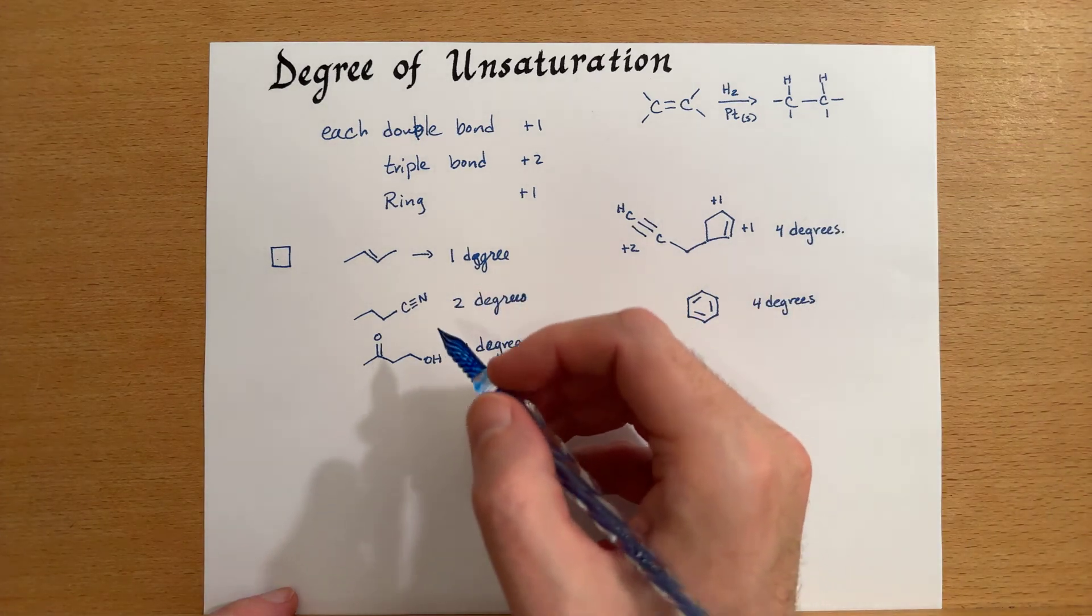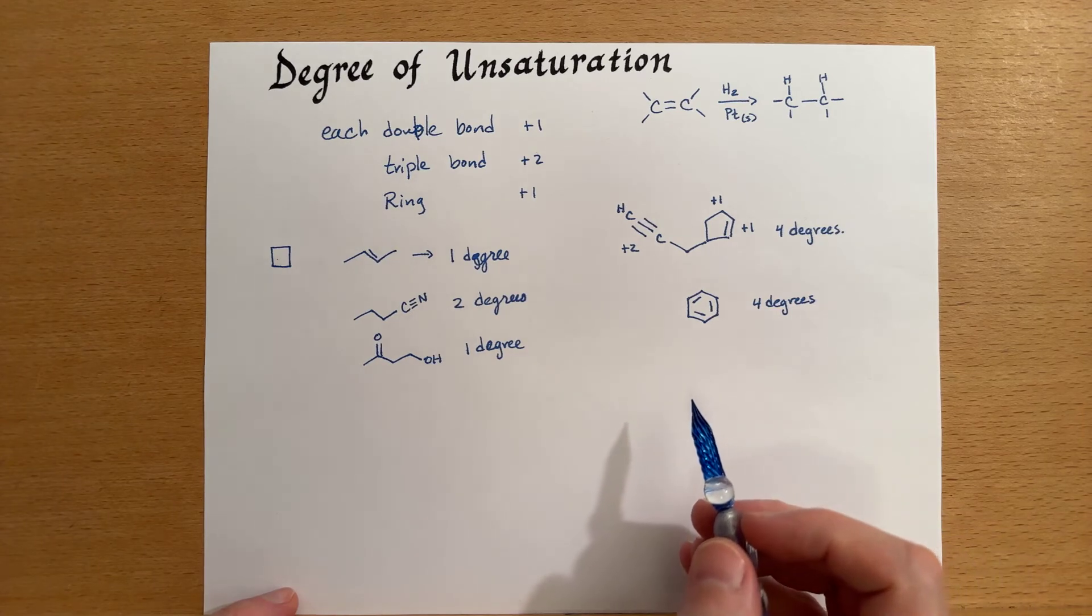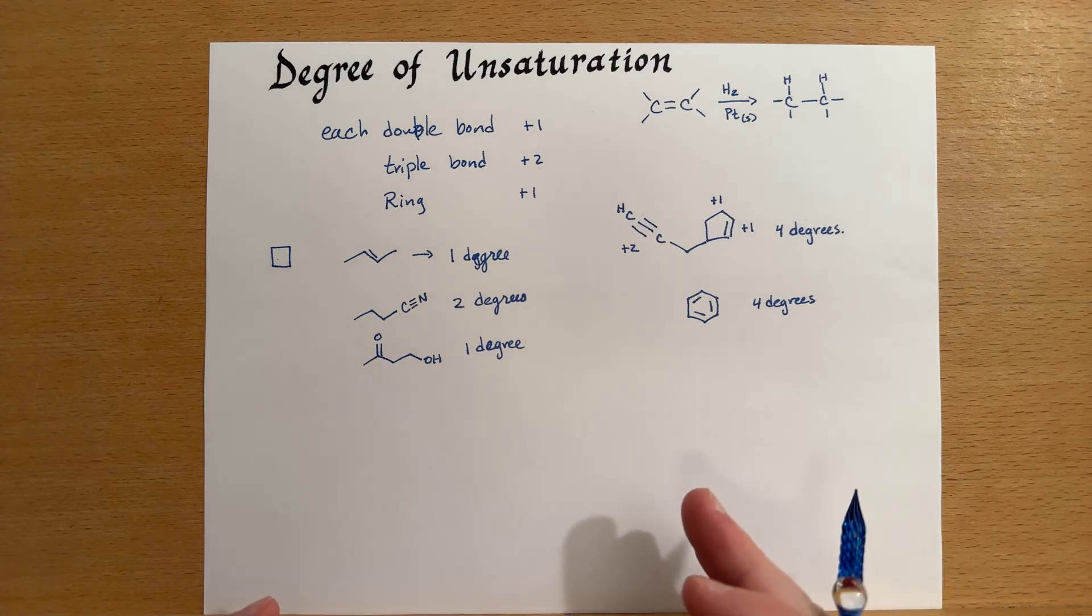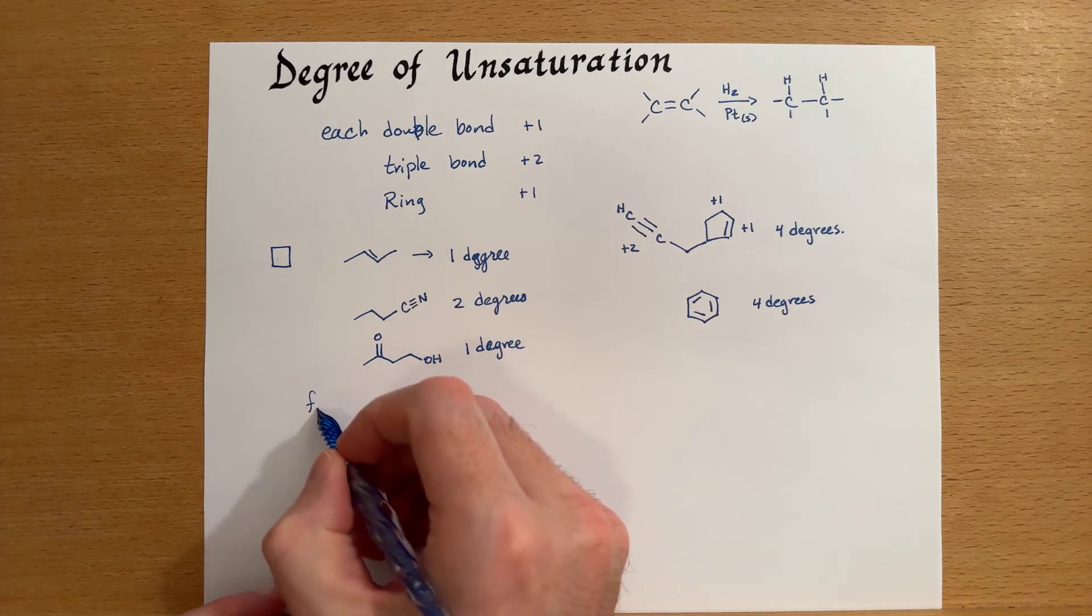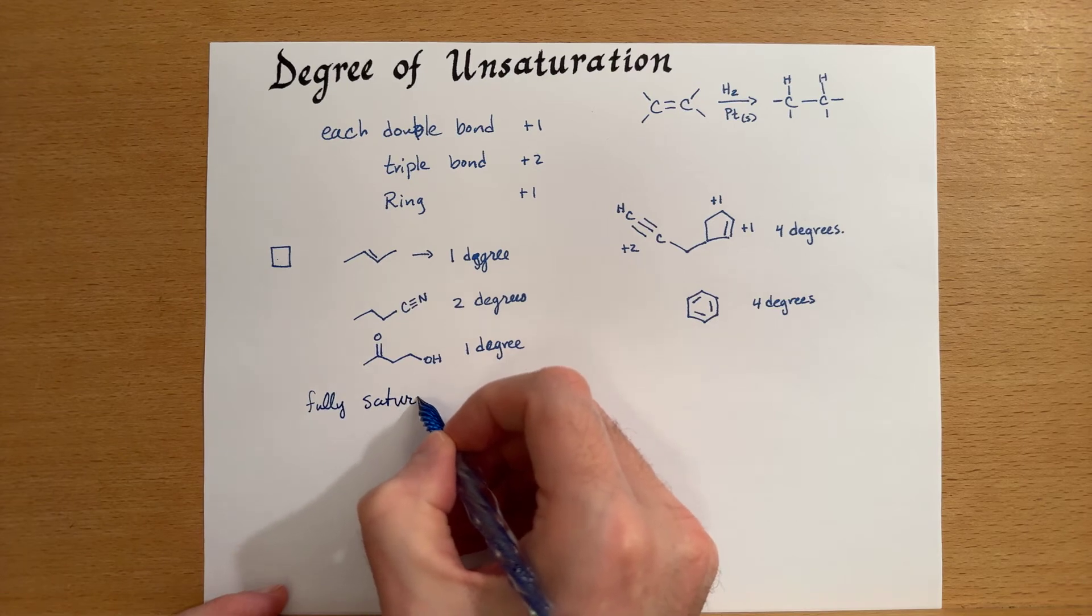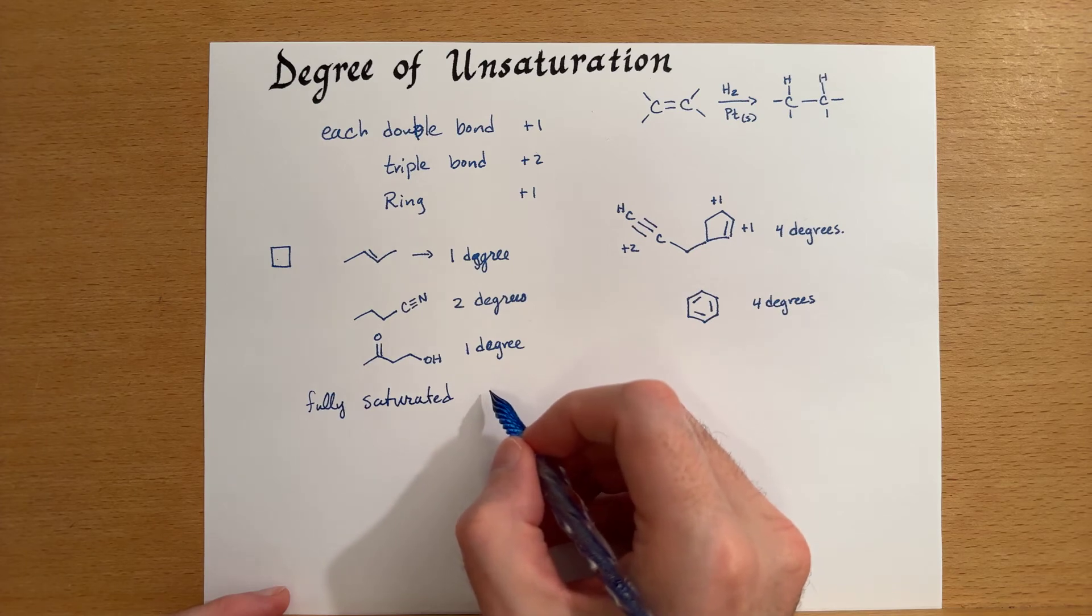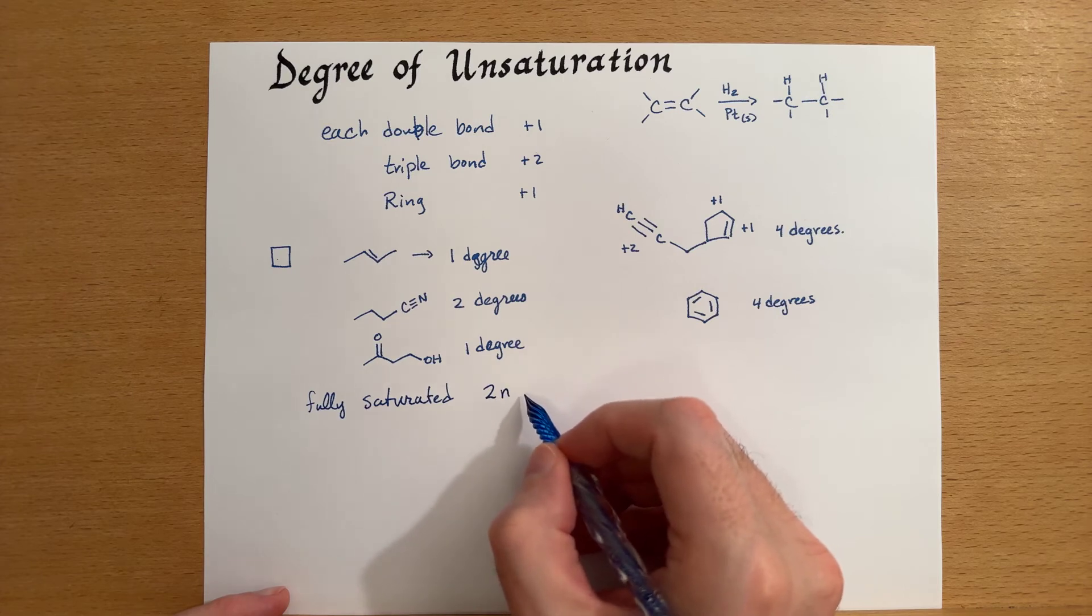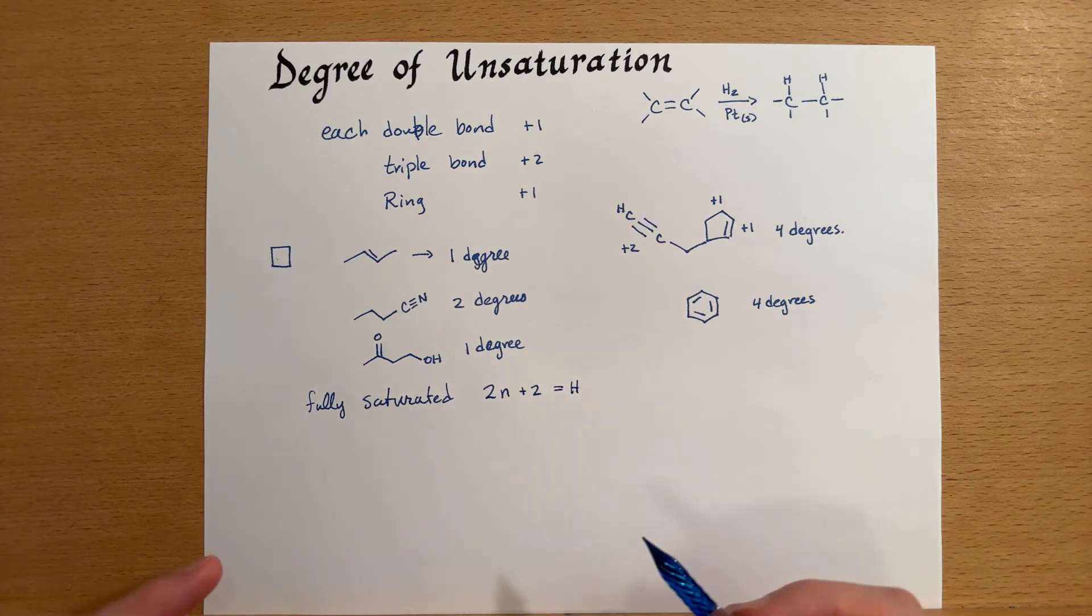Now, it's one thing to go from a structure and determine the degrees of unsaturation. It's another to go from the formula and then calculate it. You can keep this in mind that a fully saturated hydrocarbon has this formula for the number of hydrogens that it should contain: two times the number of carbons plus two. And this is the number of hydrogens that's in a fully saturated molecule.